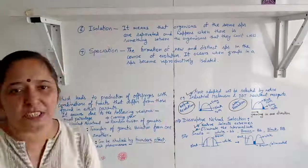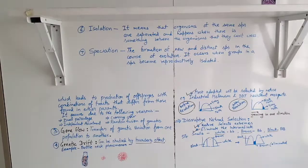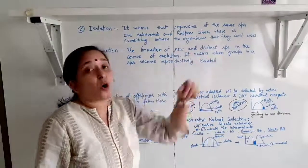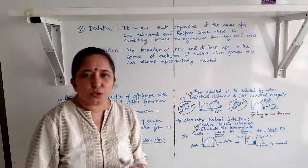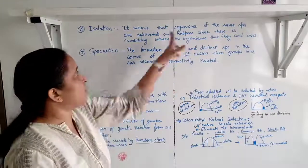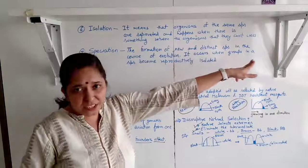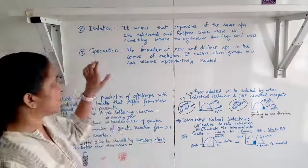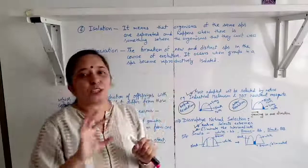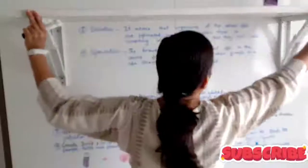Isolation means organisms of the same species are separated when there is a barrier — such as a geographical barrier — that they cannot cross. The last process is speciation: the formation of new and distinct species in the course of evolution. Speciation occurs when groups in a species become reproductively isolated and can no longer interbreed, producing different types of species.